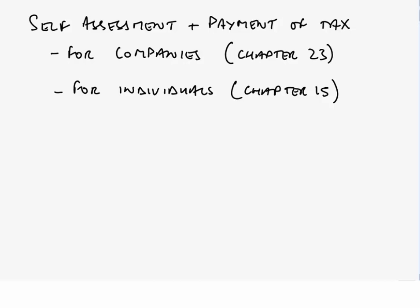When it comes to chapter 23 dealing with companies, we've actually dealt with the most important aspects — when we pay our tax. If you remember, on our introduction to chapter 22 dealing with groups, I went back and recapped over chapter 16 regarding the basic preparation of a corporate tax computation, and then moved to look at chapter 23, wherein we dealt with the payment of tax — specifically under what circumstances a company would be required to make quarterly instalment payments rather than pay on its normal due date. A company would normally pay its tax nine months and one day after the end of the chargeable accounting period.